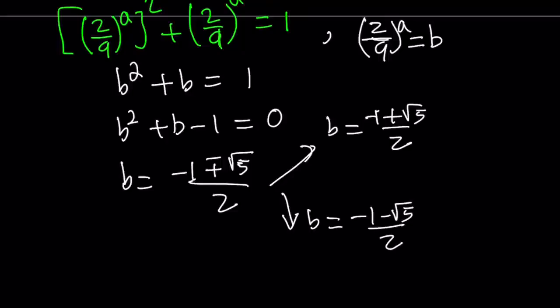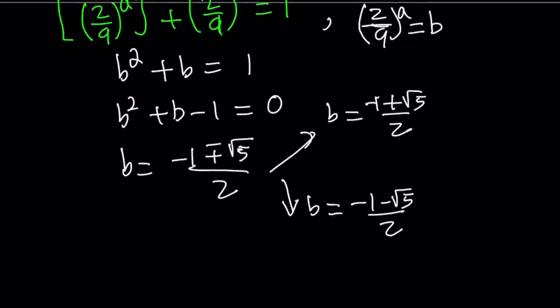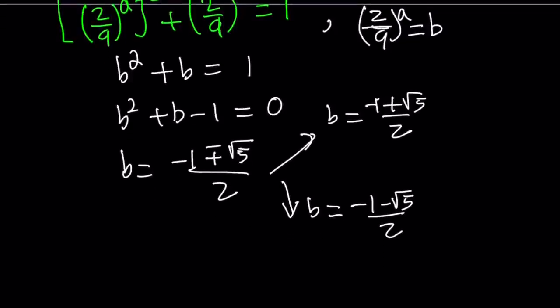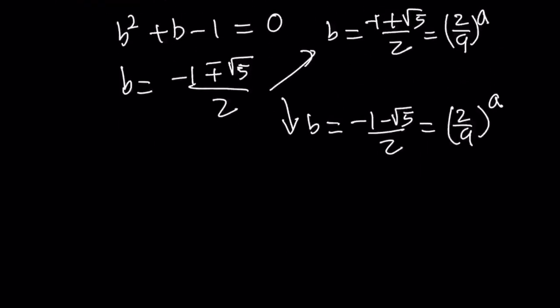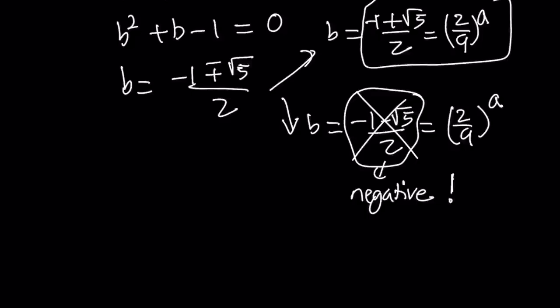So here's the interesting part. b is something to the power a, and the base is positive. When the base is negative, we run into problems. So we can write this as 2 over 9 to the power a. From here, we can find the a values, but 2 over 9 to the power a cannot equal negative 1 minus root 5 over 2, because this is negative. And 2 ninths is positive, therefore, it can't have a negative power. Make sense? So we're going to discard this solution. So we're going to go with this one. But again, that's not a solution. It's just valid. The second one is invalid.